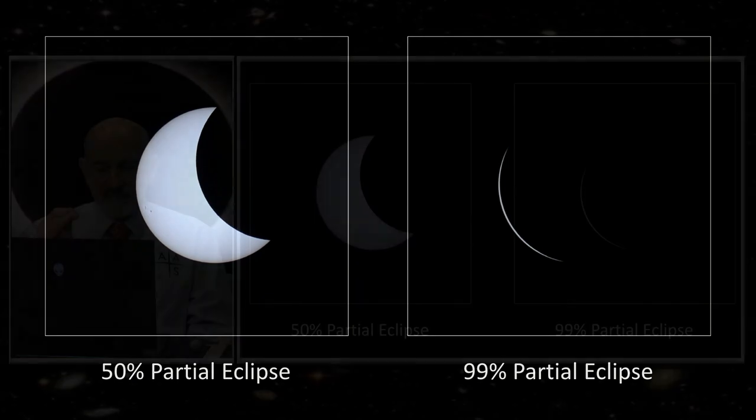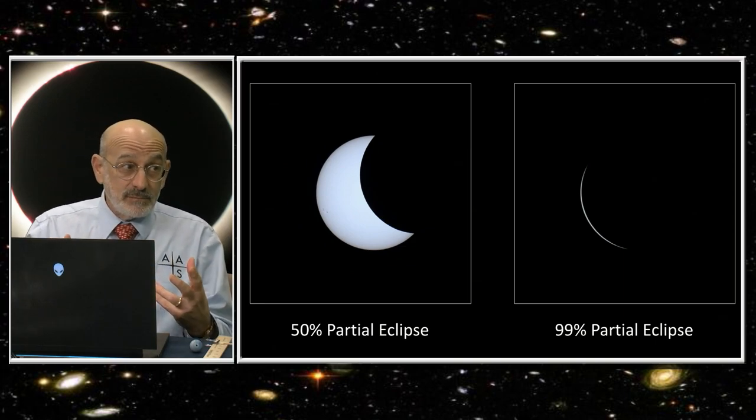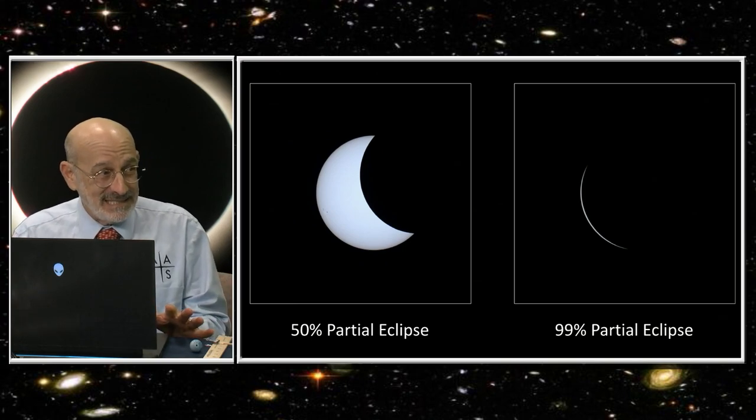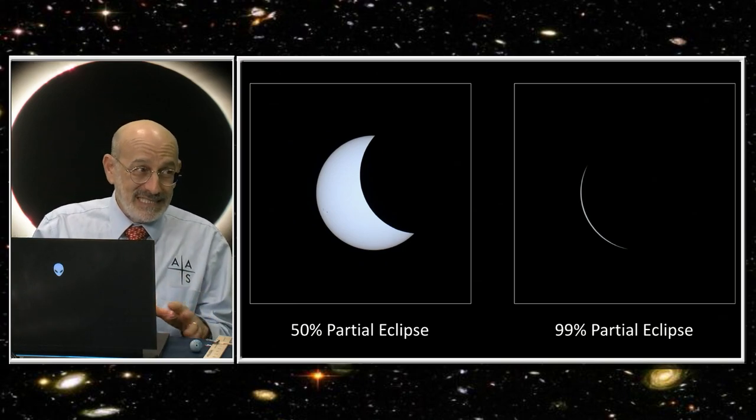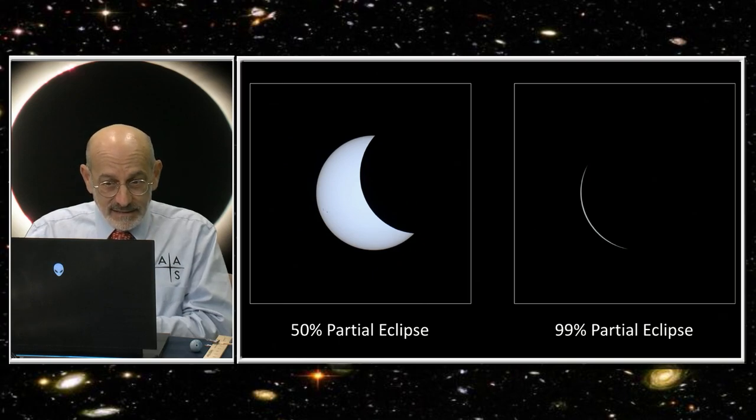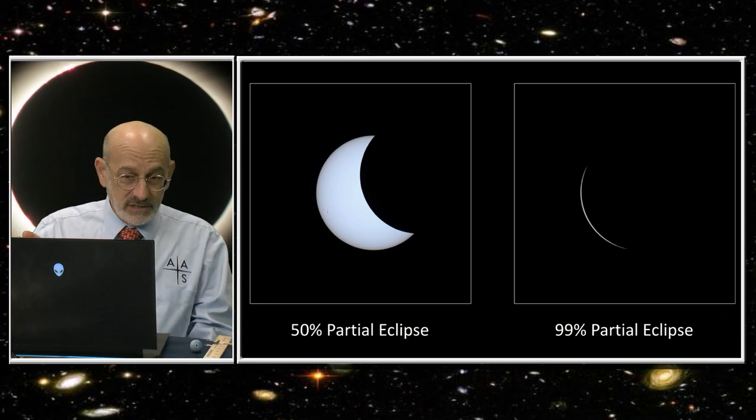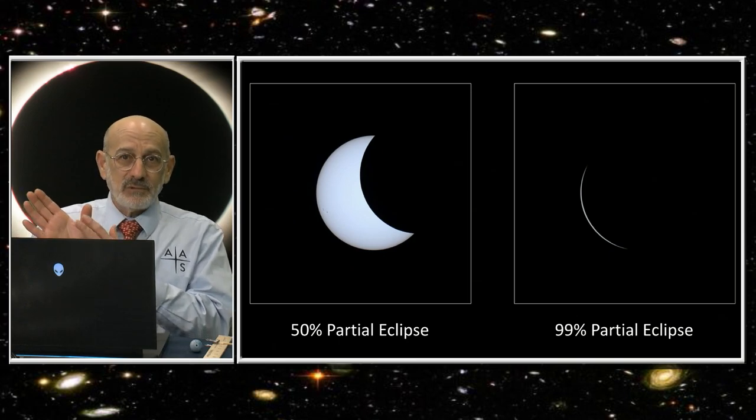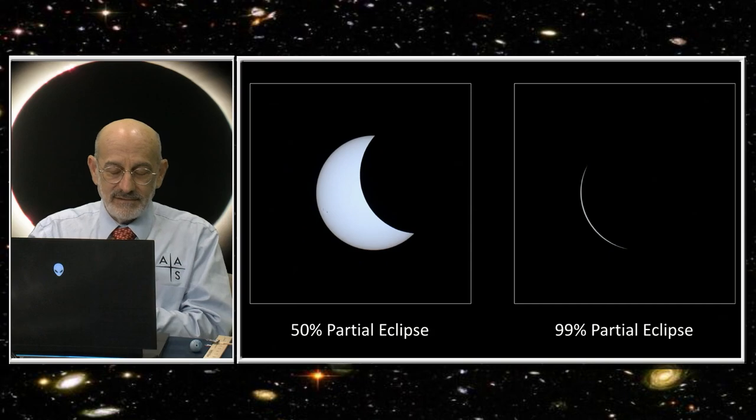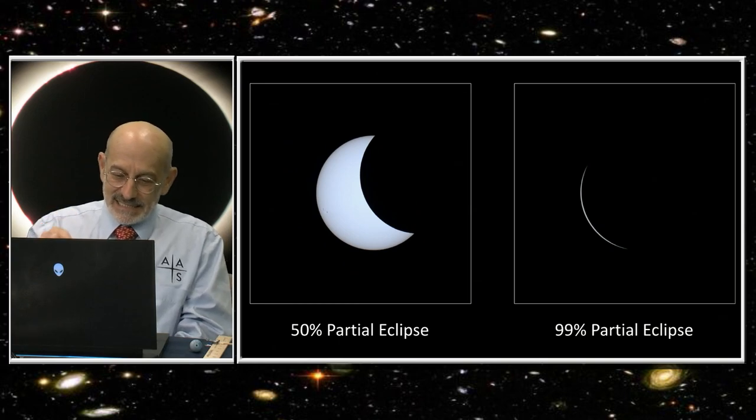This emphasizes something that drives me crazy in the media. I keep seeing the phrase, 'Well, in Concord we'll have a 96-ish percent total eclipse.' No. There's no such thing as a 96-ish percent total eclipse. It's a 96-ish percent partial eclipse.